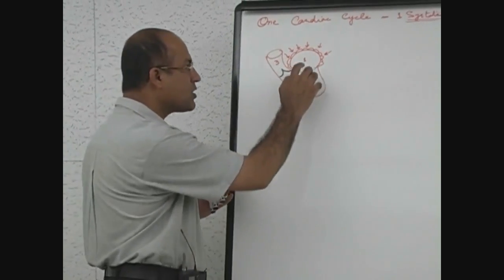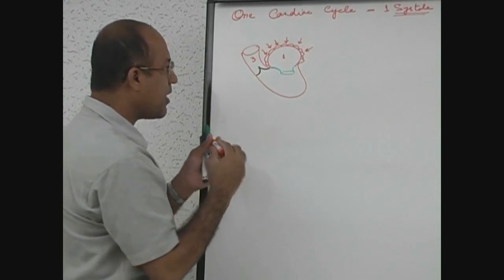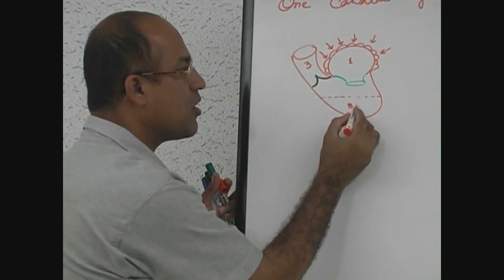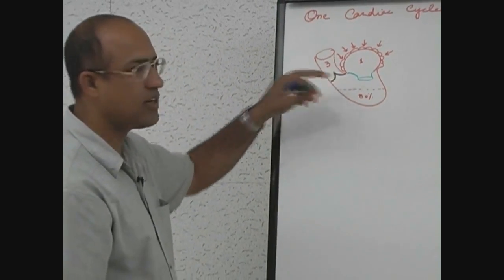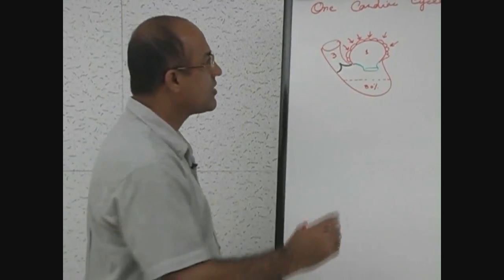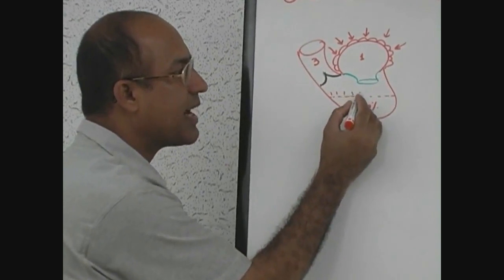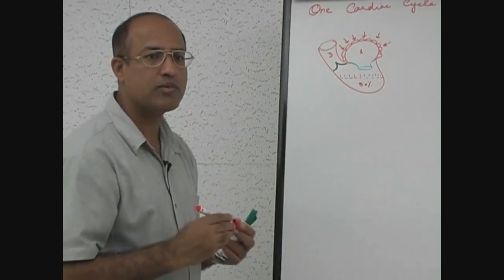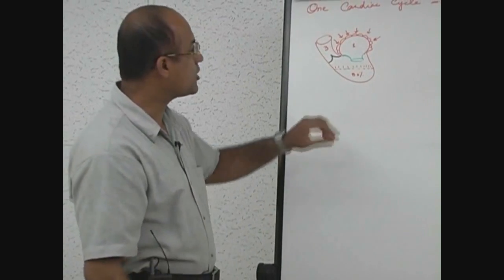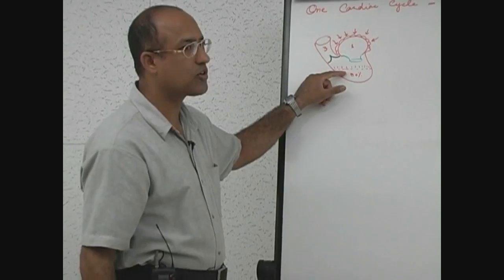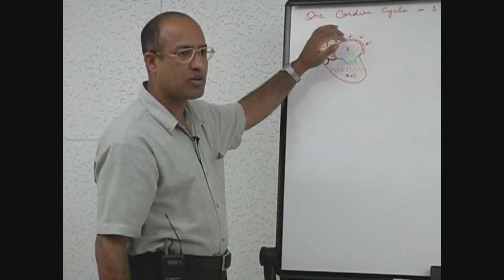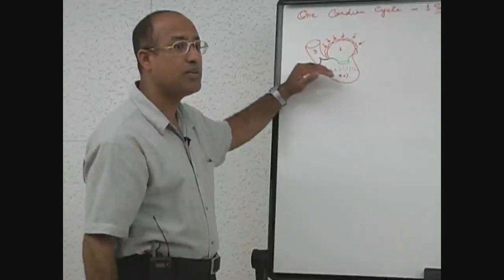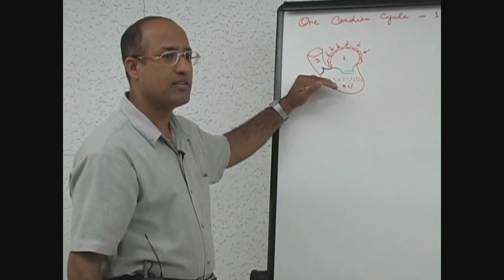Before atrial contraction starts, about 80% of ventricular filling is already done. Atrial contraction, when it occurs, just adds the last 20% of ventricular filling. The 80% of ventricular filling is passive — it does not require atrial effort. It means if someone has atria which are mechanically not working, still 80% of ventricular filling will be done and the patient will not suffer significantly.